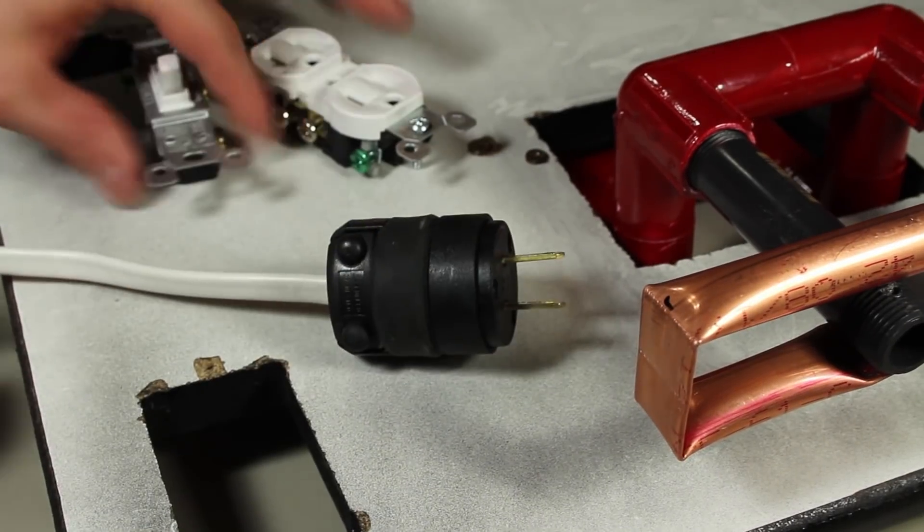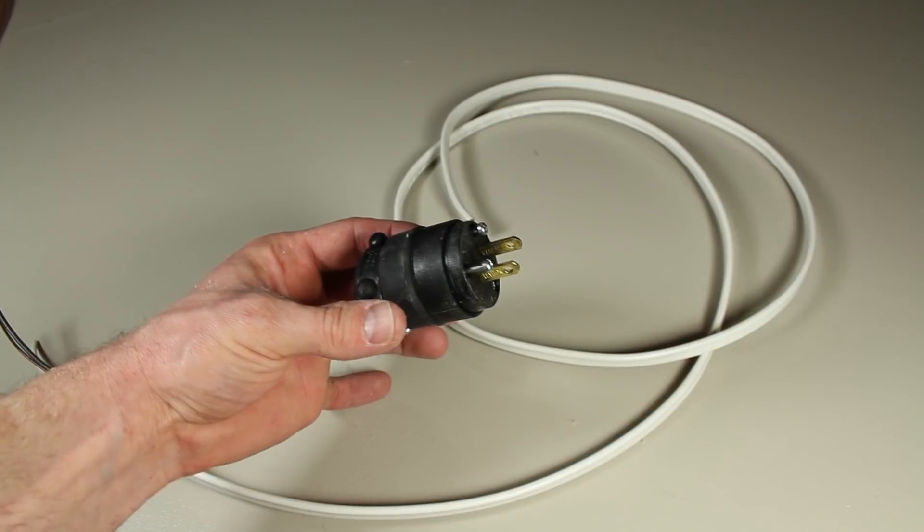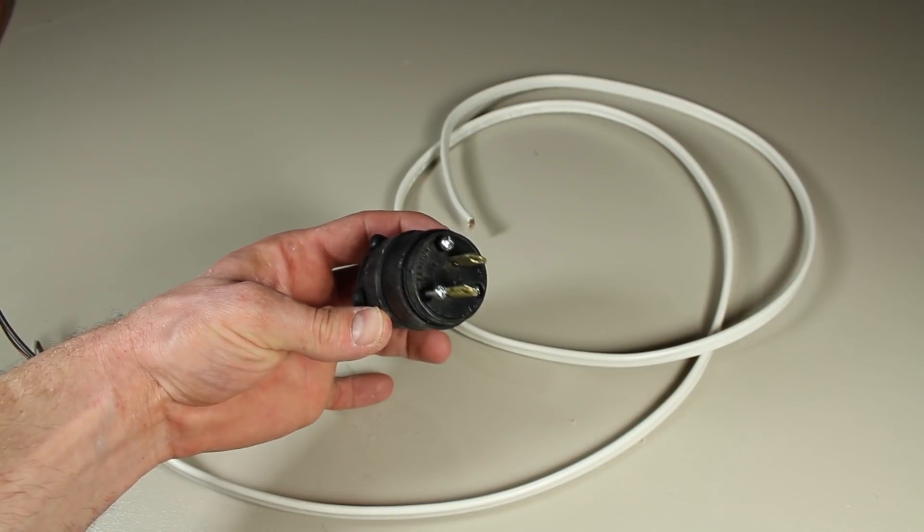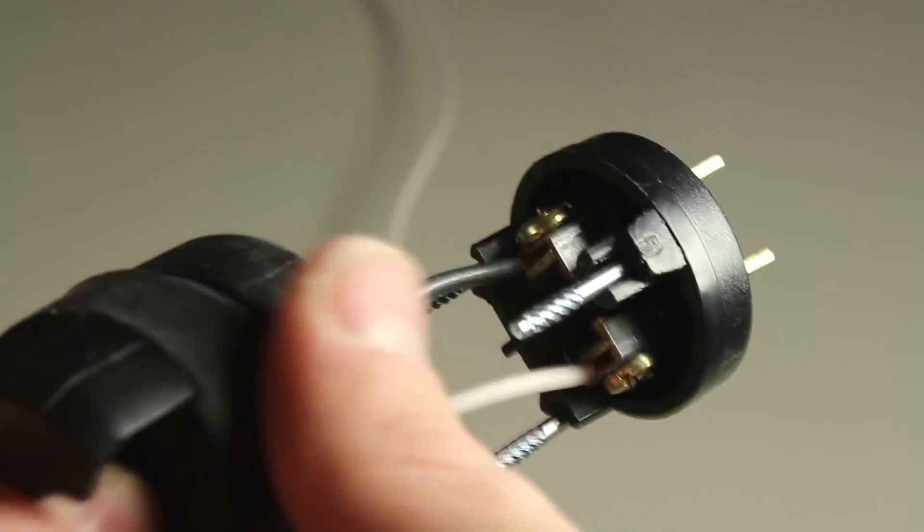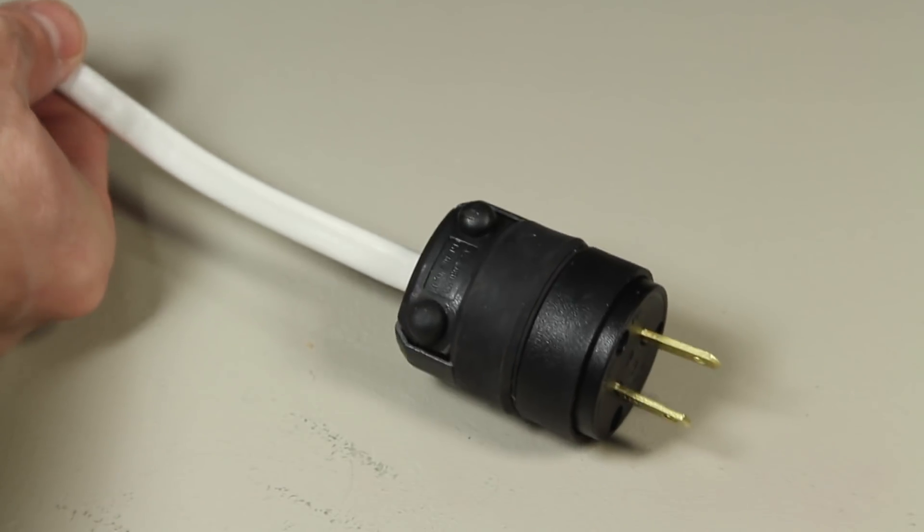Now it's time to rig up the wiring for this contraption. I've got some 12 gauge cable, and a two prong plug. The plug opens up, allowing us to connect our two wires, and screws back together, completing this end of the cable.